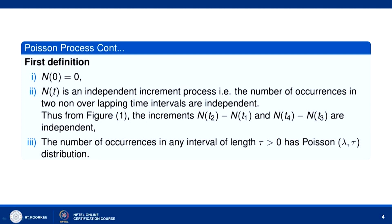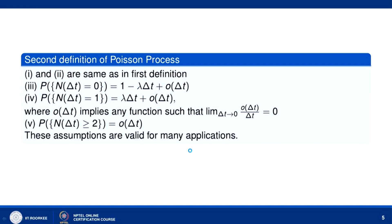N(0) = 0 and N(t) being an independent increment process also occurs in the second definition. But the third condition is replaced by: P(N(Δt) = 0) = 1 − λΔt + o(Δt), and P(N(Δt) = 1) = λΔt + o(Δt), where o(Δt) denotes any function of Δt such that o(Δt)/Δt → 0. These assumptions are valid for many applications.